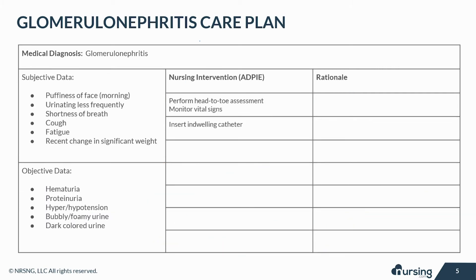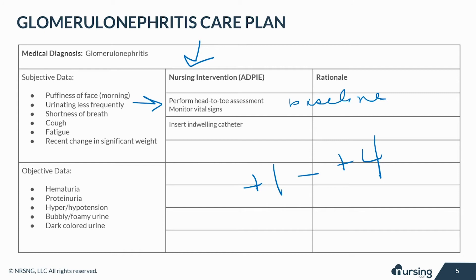Let's take a look at some of the nursing interventions important when caring for a patient with glomerulonephritis. Perform a head-to-toe assessment so a baseline can be established, to which interventions and outcomes can be measured. Auscultate the lungs, noting any adventitious breath sounds, and measure dependent and periorbital edema from plus one to plus four. Monitoring vital signs is critical, as damage to the glomeruli prevents the emptying of sodium and fluid, and can raise the heart rate and blood pressure.